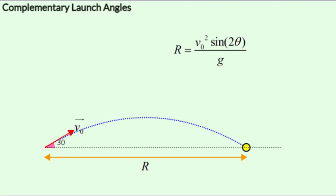We've seen now that when we launch a projectile at different angles, we get different ranges. And when we launch it at 45 degrees, we get the maximum range possible for that speed.